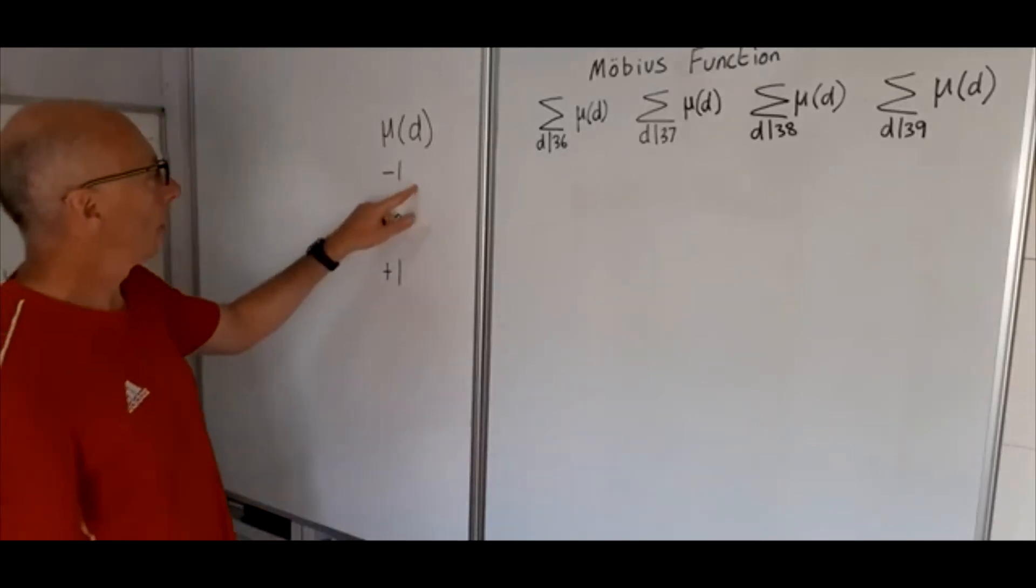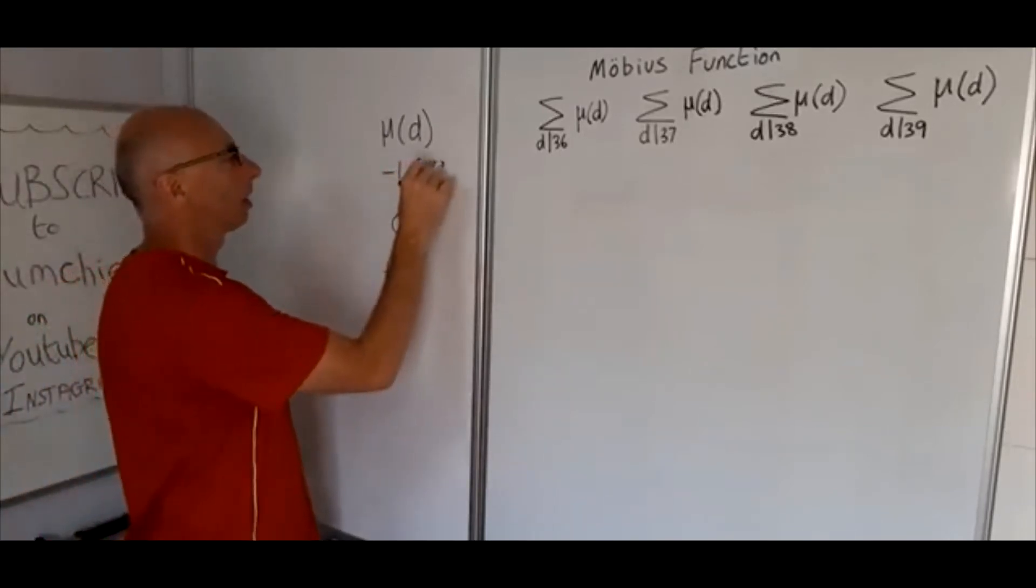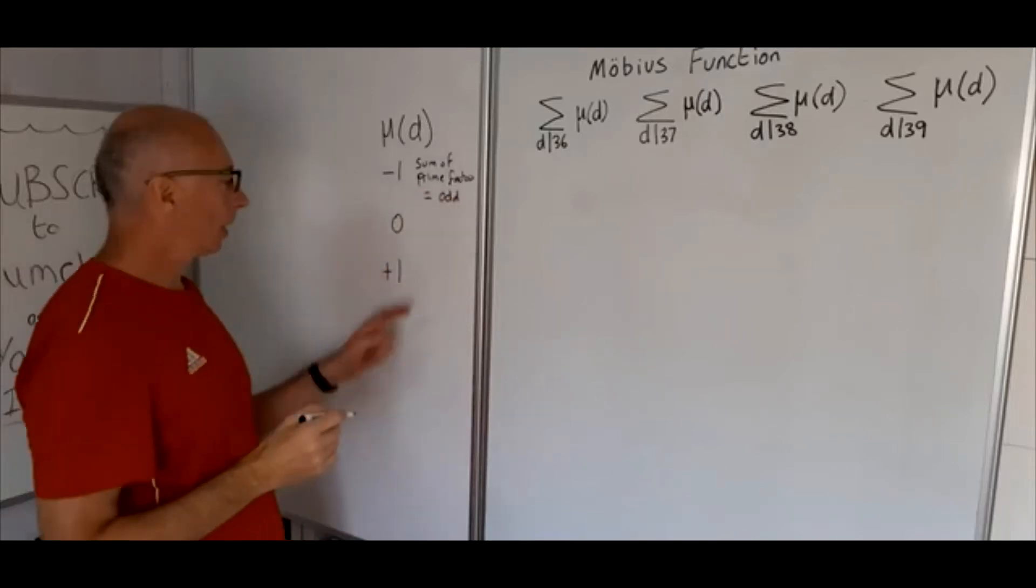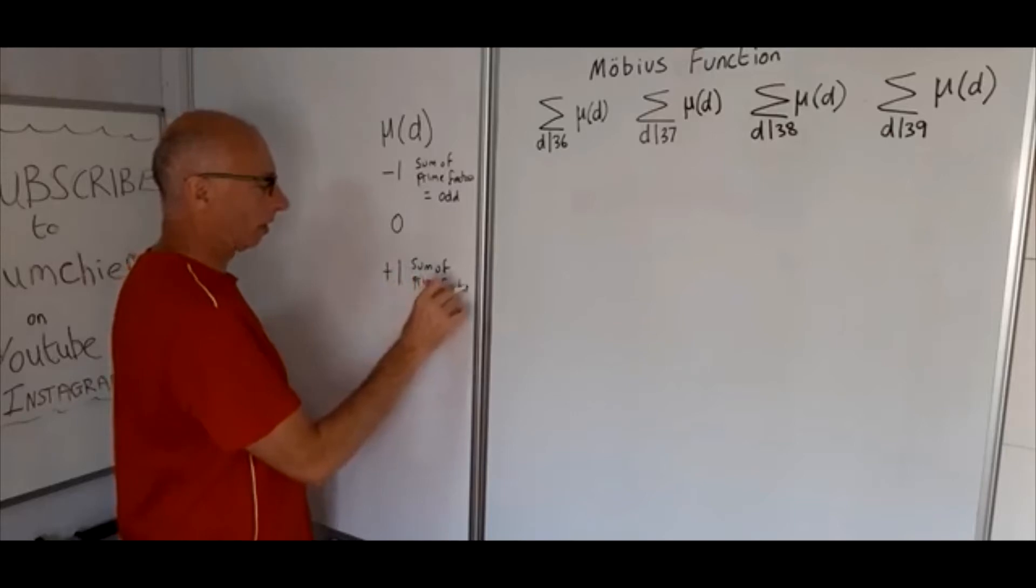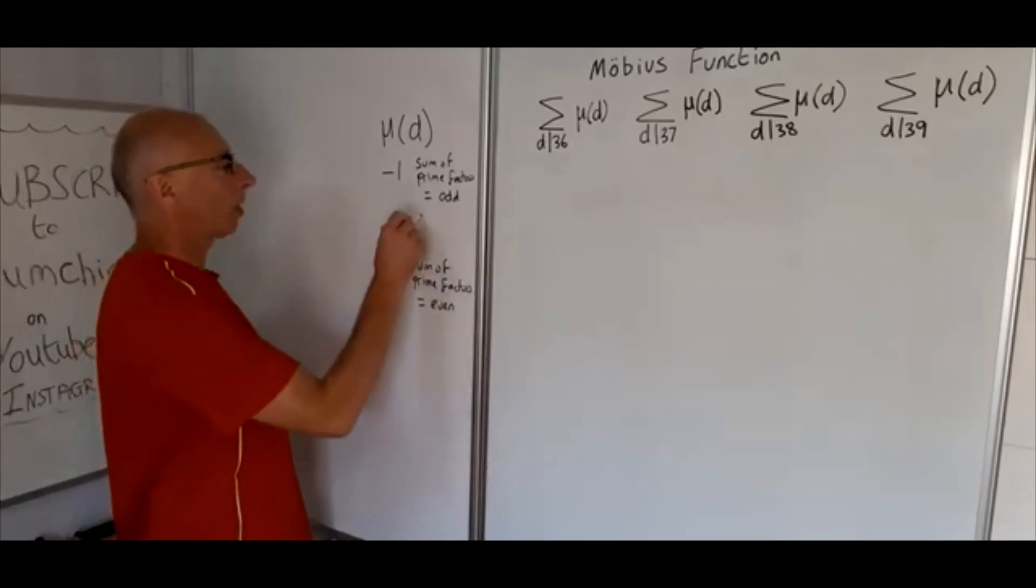So it takes minus one where the sum of its prime factors equals an odd number, and on the other side plus one when the sum of prime factors equals an even number, and it takes the value zero when the prime factors are repeated. For example, if you've got eight, I'll put here prime factors repeated.